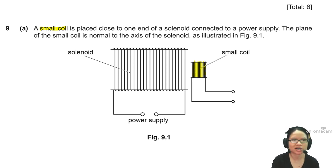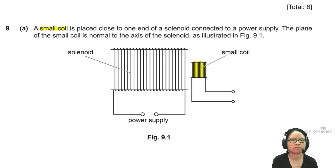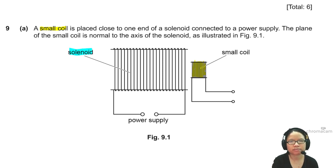The small coil is not connected to anything yet. The plane of the coil is normal to the axis of the solenoid.